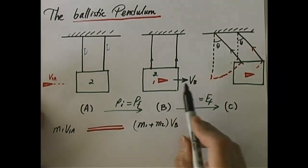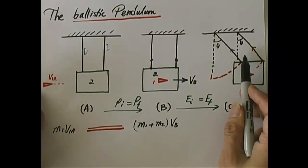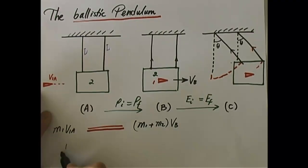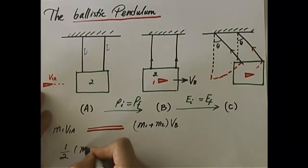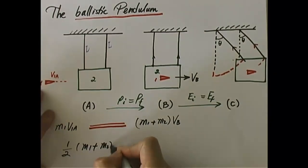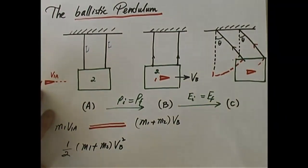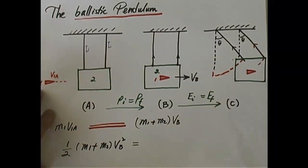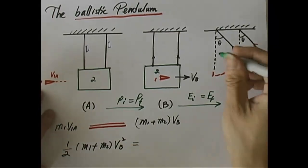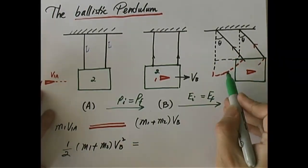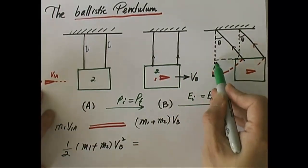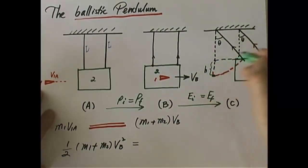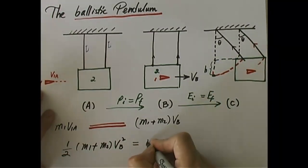From B to C, you trade all your kinetic energy for potential energy. The kinetic energy at point B is: (1/2)·(m1 + m2)·VB². That equals the potential energy at point C, which is: (m1 + m2)·g·H, where H is the height gained by the object as it swings upward.